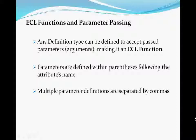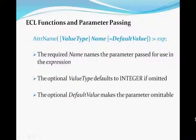Now, to make things a little more complex, let's talk about functions. The definition of a function in ECL is any definition that receives parameters is automatically a function, in that it has been genericized so as to be more flexible. The parameters are specified within parentheses attached to that definition's name. Multiple parameters are separated by commas. Each parameter may specify the data type. If omitted, the default data type is integer. The parameter's name is always required since that is how the passed value is referenced in the definition's expression. A parameter may be given a default value, which is the only way to make a parameter omittable.